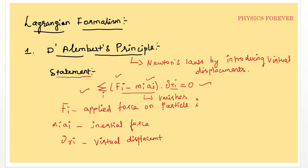Sometimes a direct exam question asks which of the following is the statement of D'Alembert's principle. The given options involve summation over i of F_i, and in some cases m_i times a_i can be written as p_i dot.